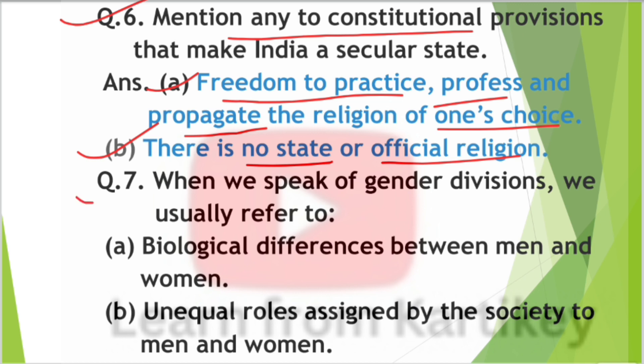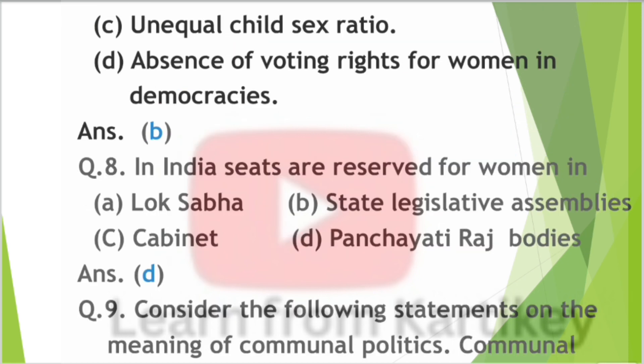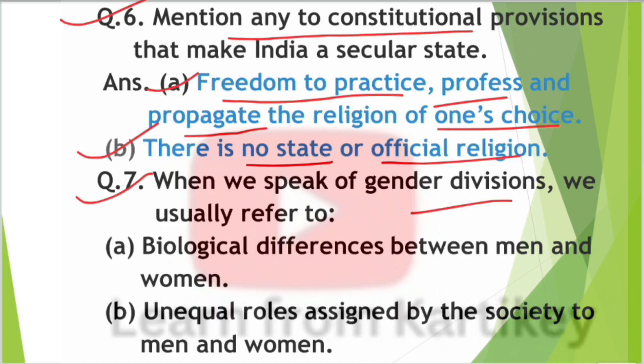Question number 7: When we speak of gender division, we usually refer to — option A: biological differences between men and women; option B: unequal roles assigned by society to men and women; option C: unequal child sex ratio; option D: absence of voting rights for women in democracies. Answer: option B — unequal roles assigned by the society to men and women.